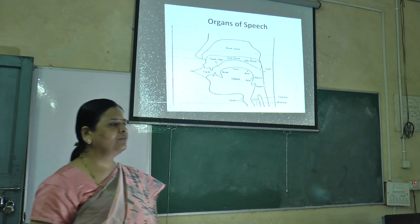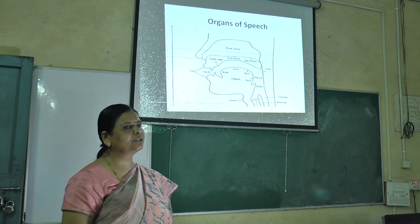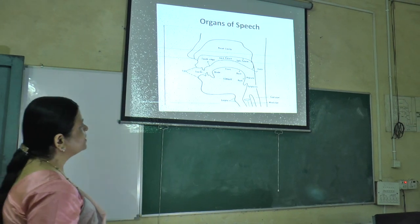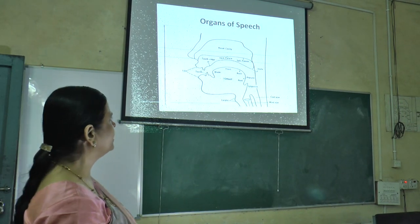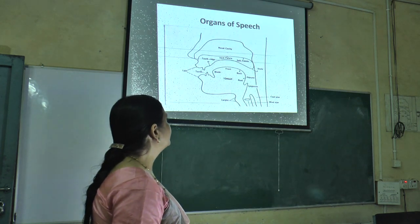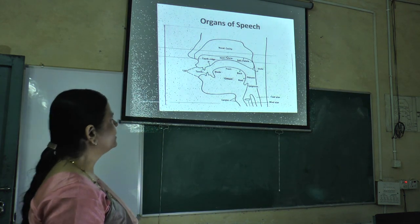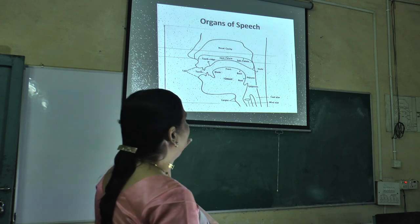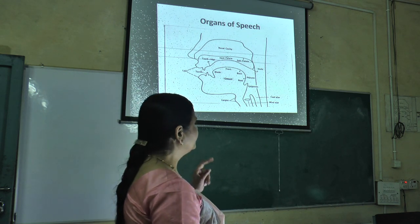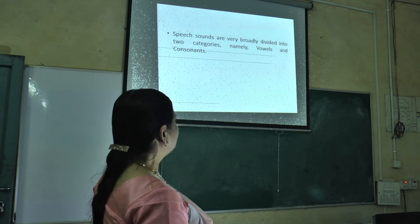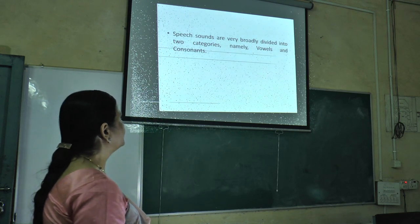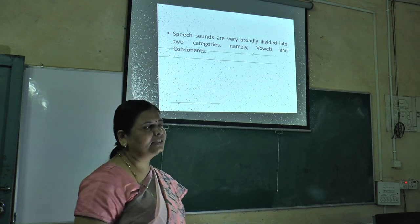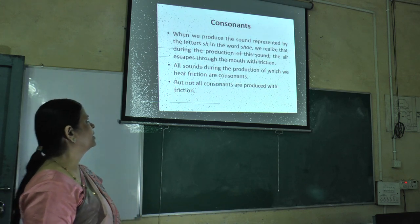You have always heard about vowels and consonants. There are five vowels, and there are consonants. But linguistically, when we speak, it is told differently. This is the diagram of the whole context of speech and sound. Speech sounds are very broadly divided into two categories, namely vowels and consonants.